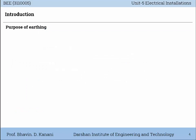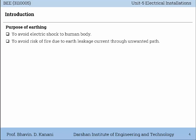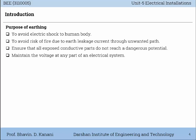Purpose of Earthing: To avoid electric shock to the human body. To avoid risk of fire due to Earth leakage current through an unwanted path. To ensure that all exposed conductive parts do not reach a dangerous potential. To maintain the voltage at any part of an electrical system.